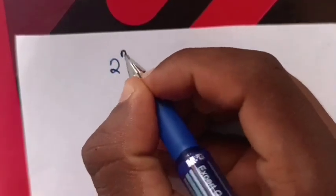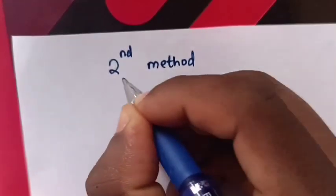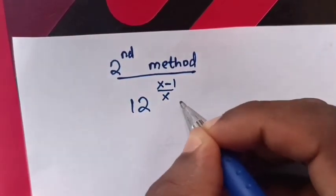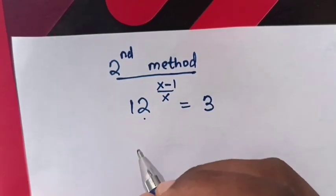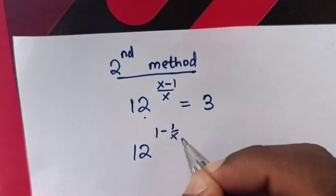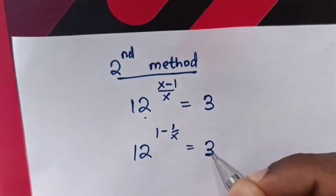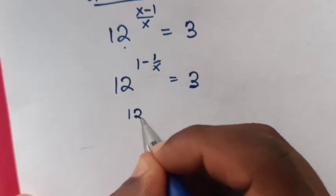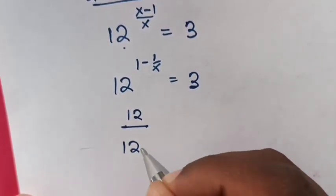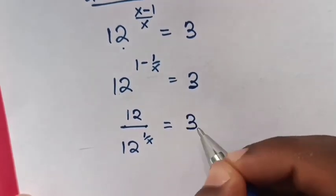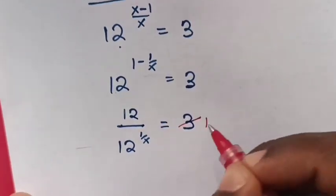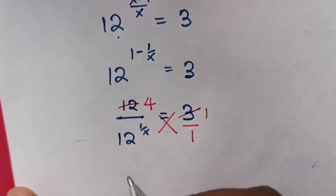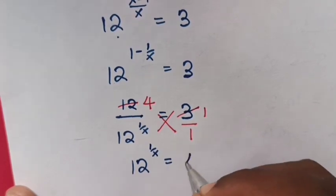Now let's try the second method. We have 12 power (x minus 1 over x) equals 3, which is 12 power (1 minus 1 over x) equals 3. We apply the division exponential rule: 12 divided by 12 power (1 over x) equals 3. Simplifying, dividing 12 by 3 gives 4, so 12 power (1 over x) equals 4.